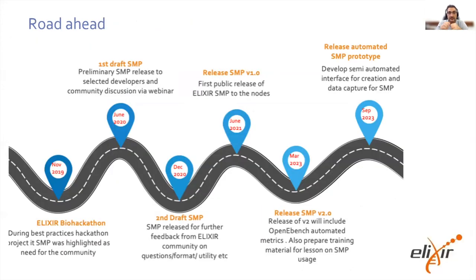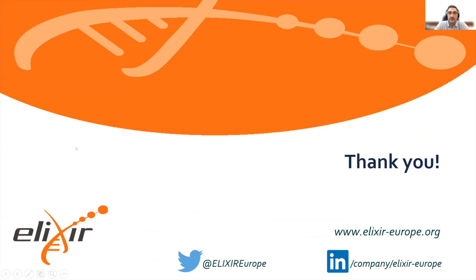On the last slide, I want to close by noting that this is essentially our first major outcome — the road has been long. We started working on this in November 2019 and are now close to a first version, a few months behind our original roadmap. The idea is that in the next couple of years we will connect this SMP to the automated metrics of OpenEBench and the Software Observatory, so we can ultimately have a semi-automatic interface for both the creation and data capturing of software management plans available to the wider community. Thank you, and I'm happy to take questions.